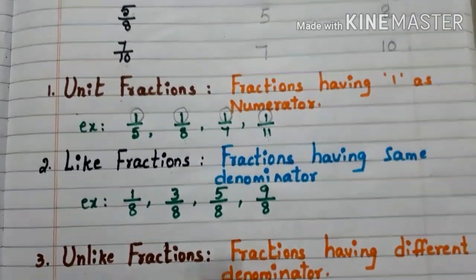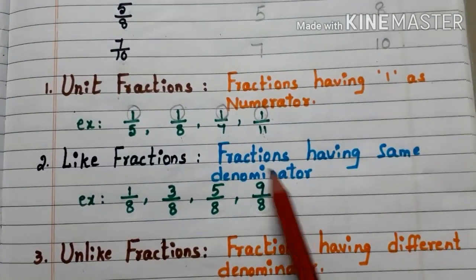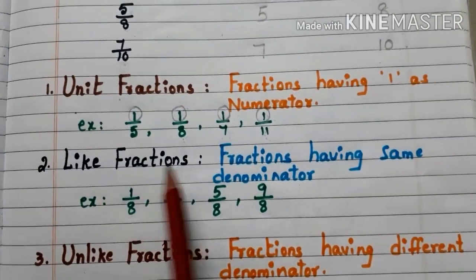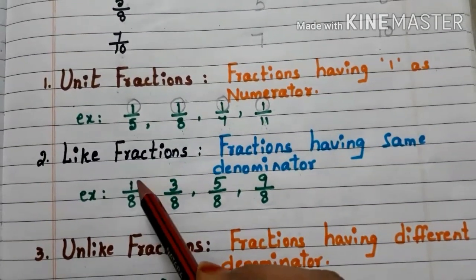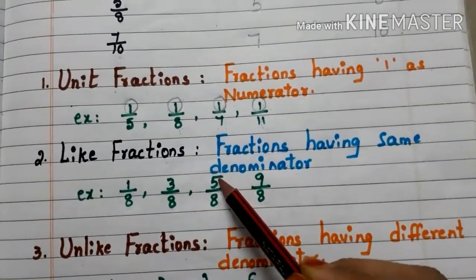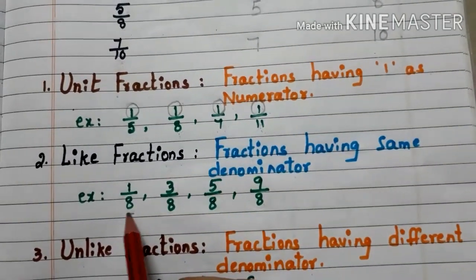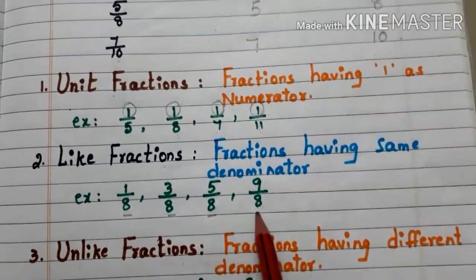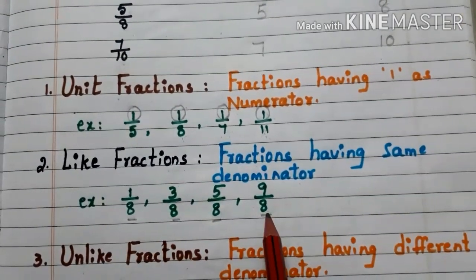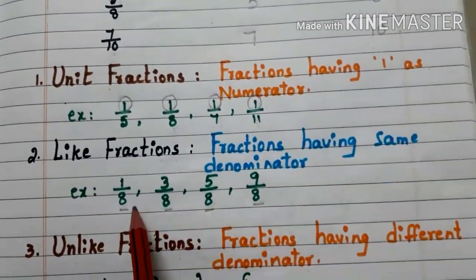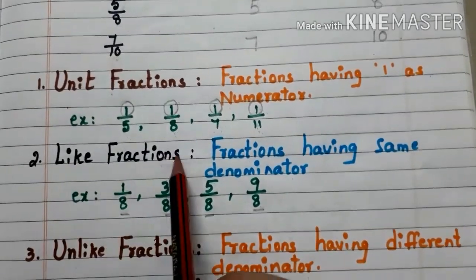Let us go to like fractions. Fractions having the same denominator are called like fractions. Here we have some examples: 1 by 8, 3 by 8, 5 by 8, and 9 by 8. Observe the denominators — all fractions have 8 as the denominator. So these type of fractions are known as like fractions.